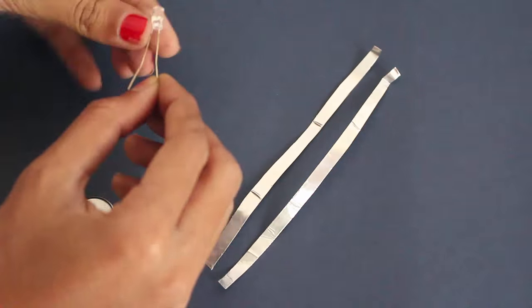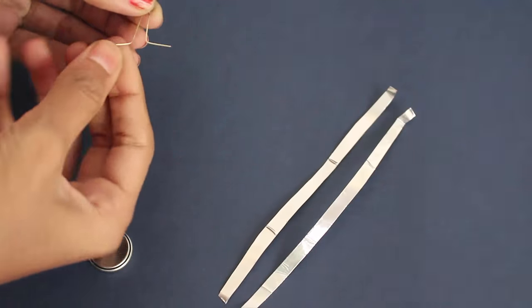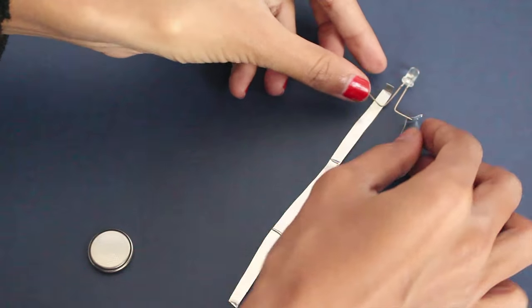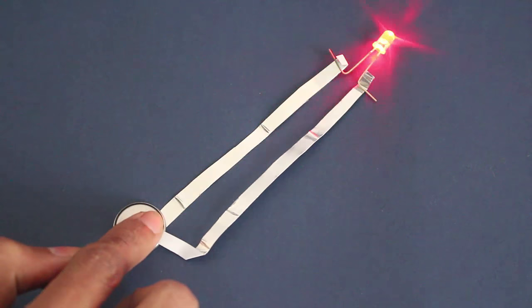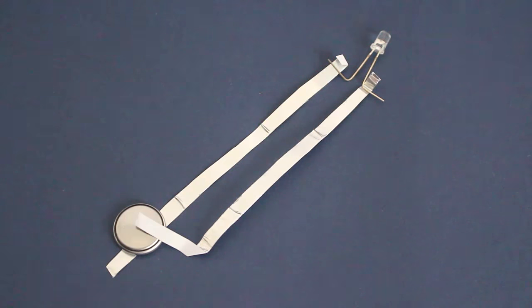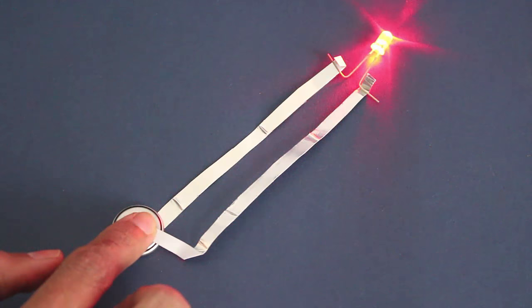Bend the LED terminals and place them on two thin aluminum strips. Place the button cell on the lower end of the left strip and bend the right strip so that it is right on top of the button cell.